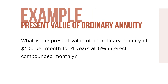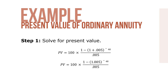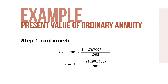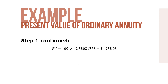Here's an example. What is the present value of an ordinary annuity of $100 per month for four years at 6% interest compounded monthly? Step one, solve for the present value using the following formula. Our present value equals 100 times 42.58031778, which means present value equals $4,258.03.